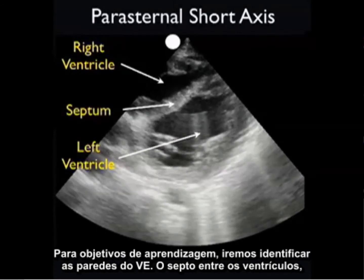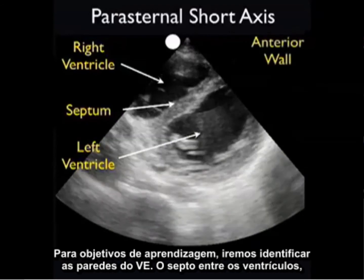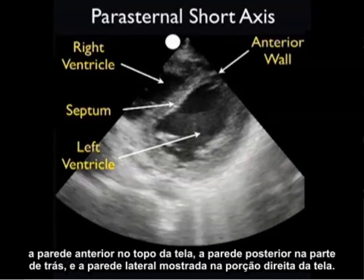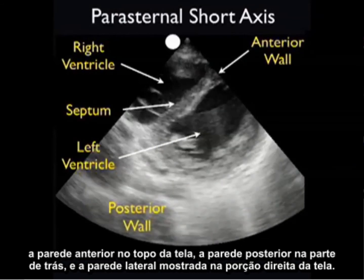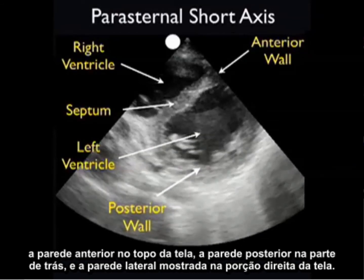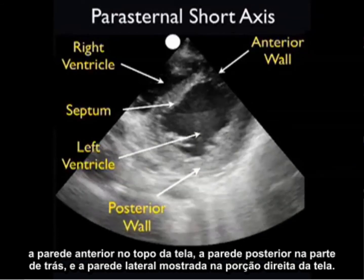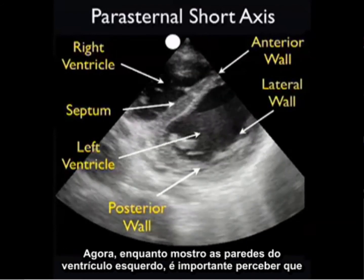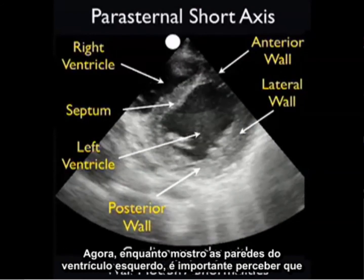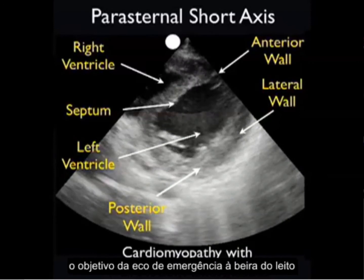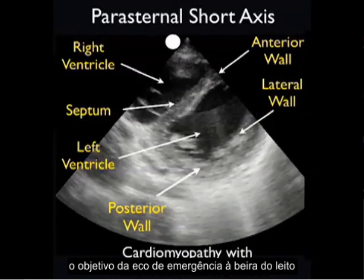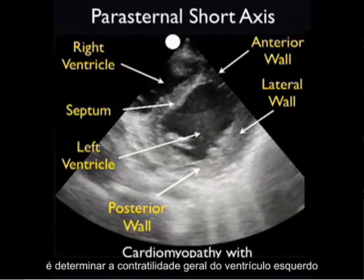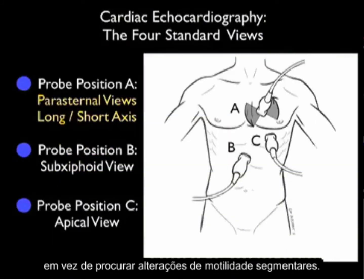For learning purposes, we'll identify the walls of the LV: the septum in between the ventricles, the anterior wall to the top of the screen, the posterior wall to the back, and the lateral wall towards the right portion of the screen. It's important to realize that the goal of emergency echo at the bedside is to determine overall left ventricular contractility rather than looking for segmental wall motion abnormalities.